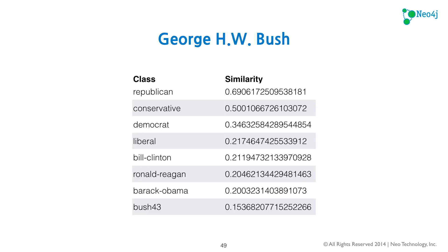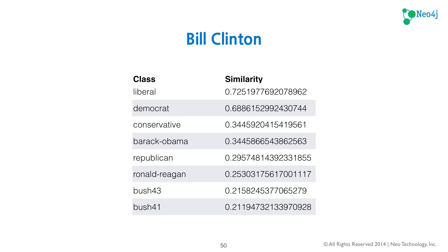Moving forward to Bill Clinton — he has Liberal and Democrat at the top, which were the labels provided in the training phase. We can see how far Liberal is from Conservative. Bill Clinton is closest to Barack Obama. There was something off about Ronald Reagan in these results, which is actually a good thing given the label accuracy issue. Bush 43 and 41 remain at the bottom, most different from Clinton.